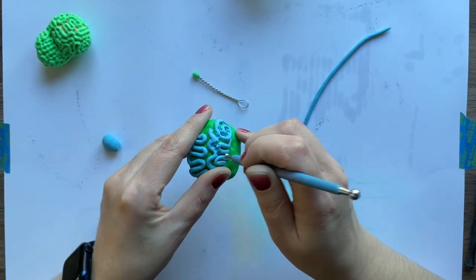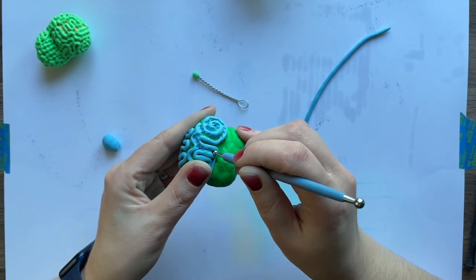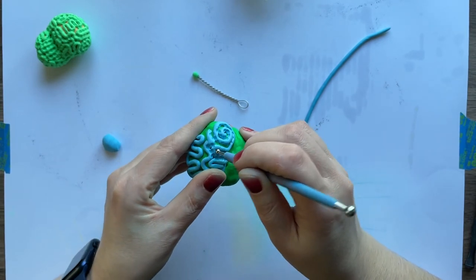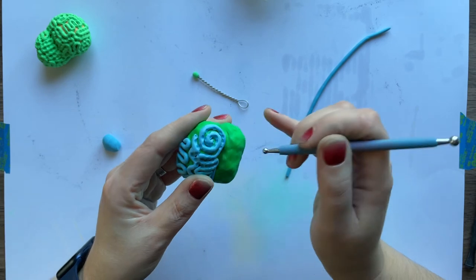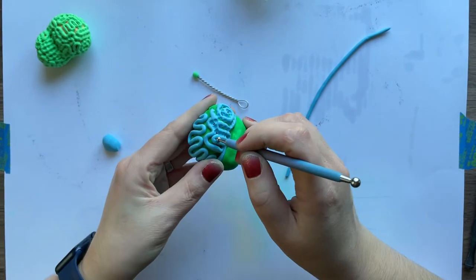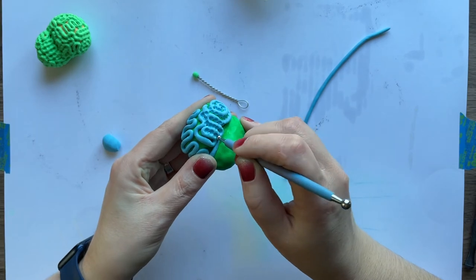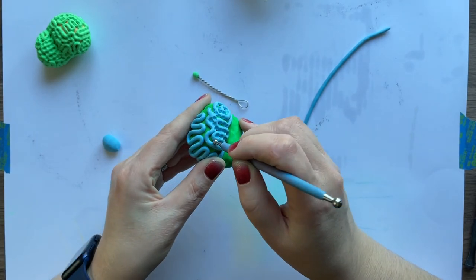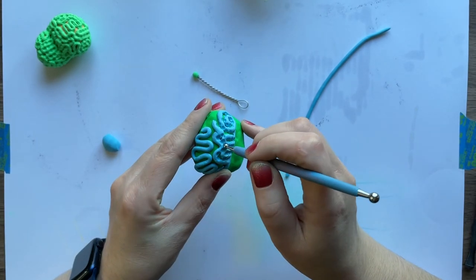As long as they're close enough that you can hit both sides with your tool and far enough away that you can still see some of the green, that's what you want. You're just going to go through it and start poking this tool in there to give the texture.